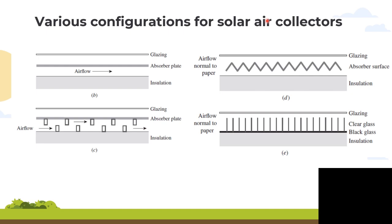Configuration D is the corrugated surface design. This configuration has a zigzag absorber surface — this zigzag shape increases the surface area, helping to improve heat transfer. Air flows over the corrugated surface, leading to increased turbulence and better mixing, which enhances the heat exchange process.